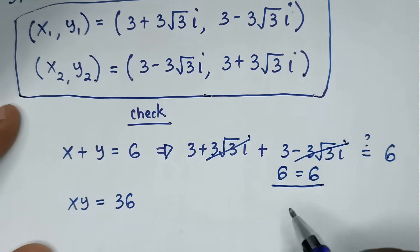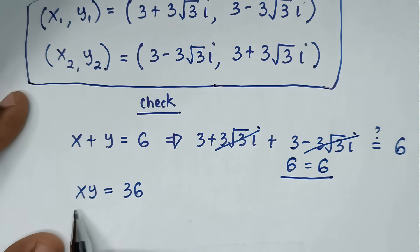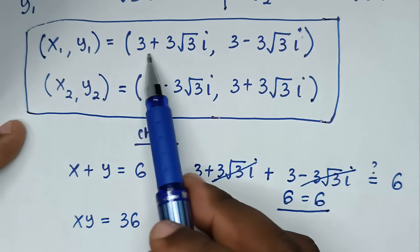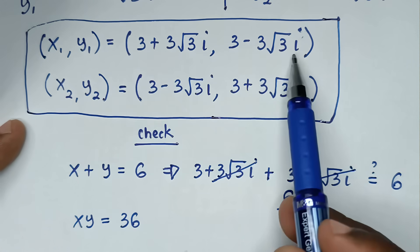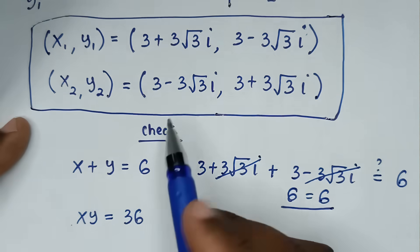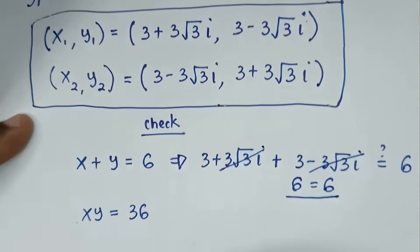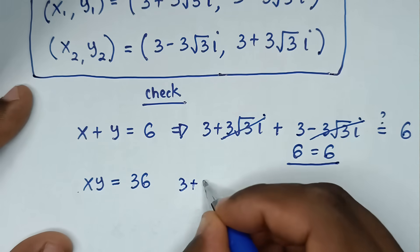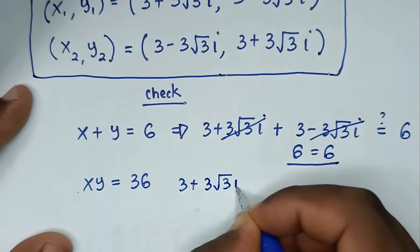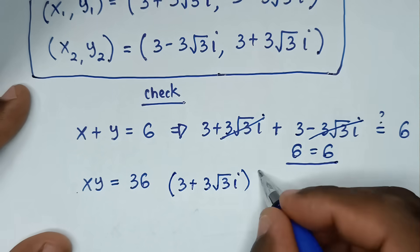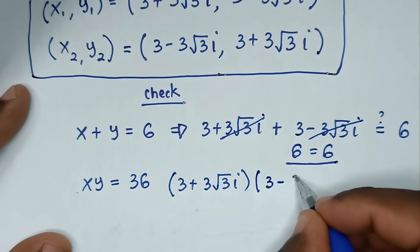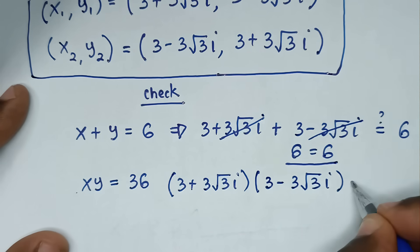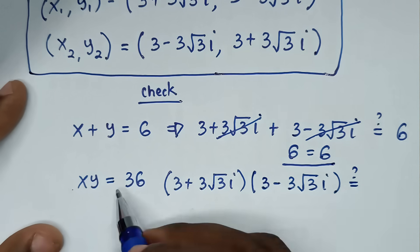Now let's check the second equation using the first solution. So x times y will be bracket 3 plus 3 square root of 3i bracket times bracket 3 minus 3 square root of 3i bracket. Is this equal to 36?